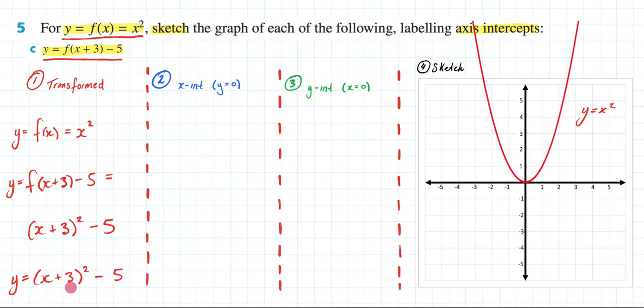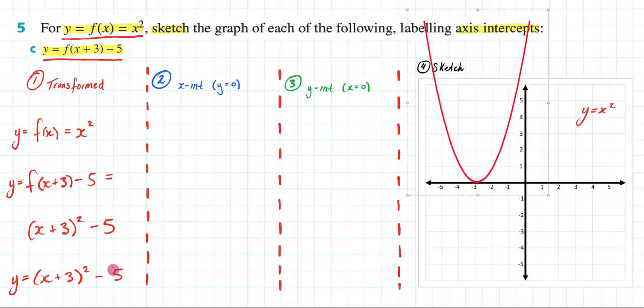So this is what I'm trying to sketch and hopefully just by looking at this you can recognize what our transformations will be. This plus 3 here is going to mean that I'm going to take my graph and shift it 3 units in the negative x direction. So 1, 2, 3. And this minus 5 here is going to mean I'm going to take my graph and move it 5 units in the negative y direction. So I'm going to move it 5 units down to here.